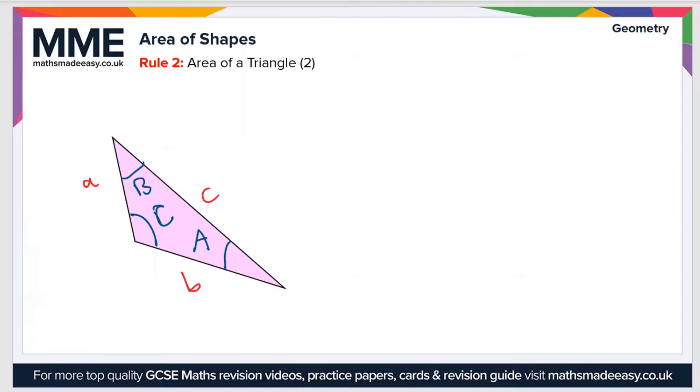The area is given by a half times side a times side b times sine, which is a trigonometric function of angle C. If you're not familiar with the trigonometric functions like sine, cosine, tan, then feel free to check out any of our other online resources. But this is the second rule for finding the area of a triangle.